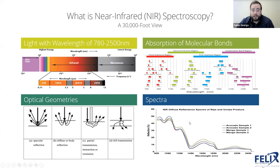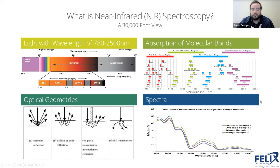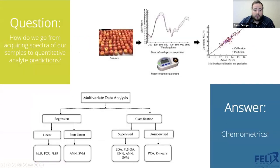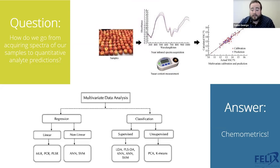That is all well and good — we can get this spectra out of it — but that doesn't necessarily help anyone in the commercial agriculture sector. All it's doing is giving you a spectra. What do you do with that? If you want to use it for something like quality control or phenotyping in the field, the question is: how do we go from acquiring that spectra to creating quantitative predictions of certain analytes, or even just creating classification models? The answer is we're going to use the discipline called chemometrics.